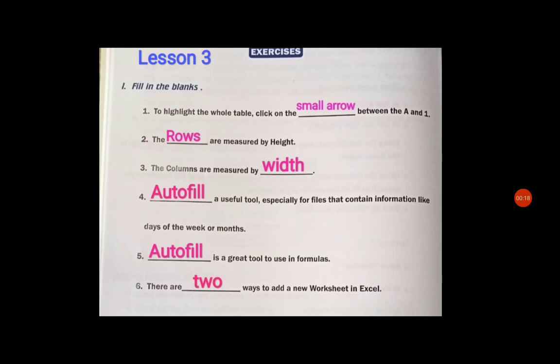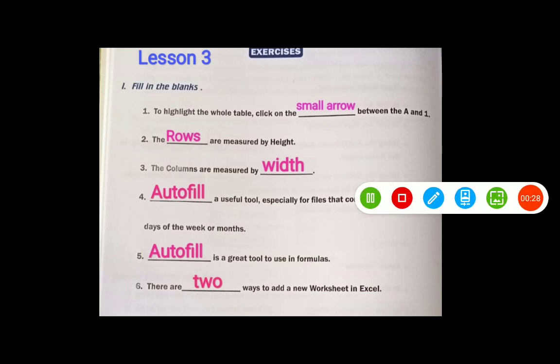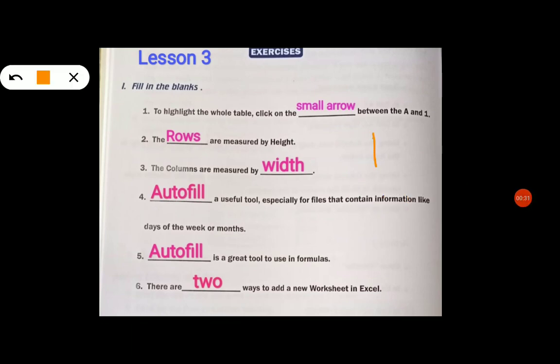If you want to select the whole table, click on the small arrow between A and 1. Small arrow is the answer. See, this is the spreadsheet. The rows are numbered and the columns are lettered ABC. If you want to highlight the whole table, you have to click the small arrow between A and 1.